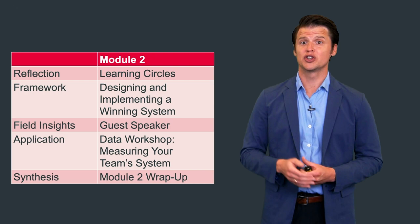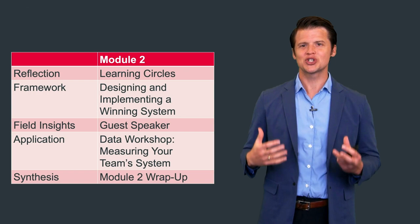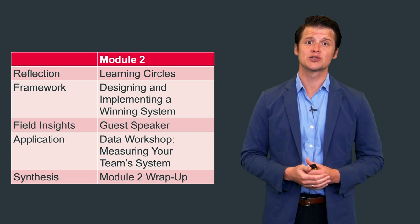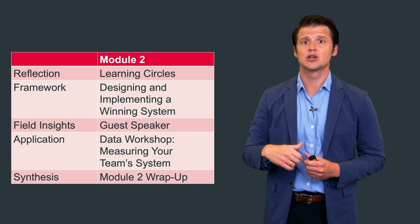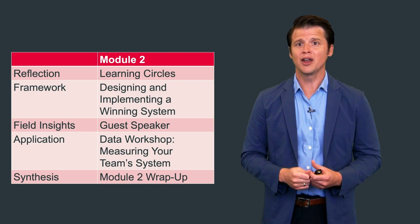The second module focuses on your team's system, how the talent works together to achieve the common goal. It has the same five-part structure as Module 1. The main differences are in the learning circles, in which we will have you reflect on your learnings from Module 1. Another key difference is the framework.